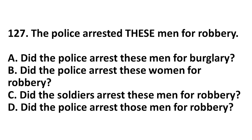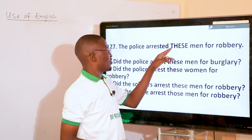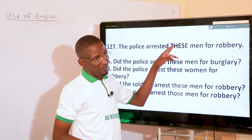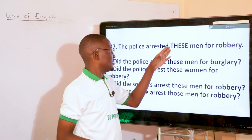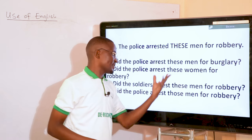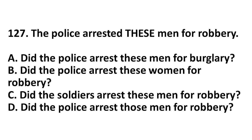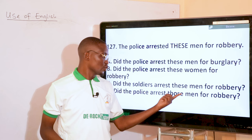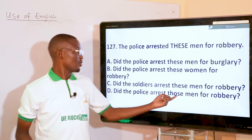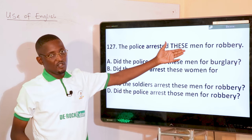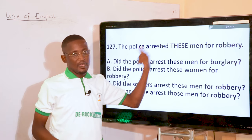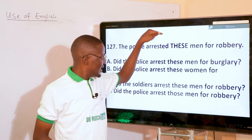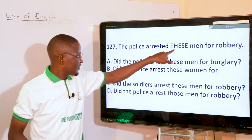The police arrested this man for robbery. 'This' is the emboldened word, referring to a near entity. Looking at the options, we have 'this man' appearing in three of them. But option D comes up with 'those,' which is incongruent with 'this' here. So option D is the one inappropriately answering the appropriateness of the sentence.